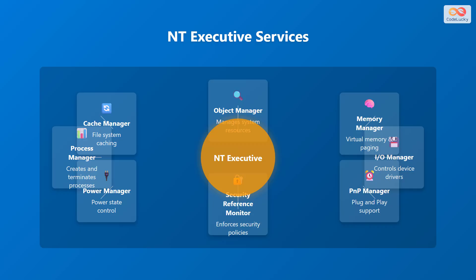The NT executive services form a crucial part of the Windows NT architecture. These services operate in kernel mode and provide essential functionalities. Surrounding the NT executive are several key services: the Object Manager, which manages system resources; the Input-Output Manager, which controls device drivers; the Security Reference Monitor, which enforces security policies; the Process Manager, which creates and terminates processes; the Memory Manager, which handles virtual memory and paging; the Plug-and-Play Manager; the Power Manager, which controls power states; and the Cache Manager, which manages file system caching. These services work together to ensure the smooth operation of the Windows NT system.